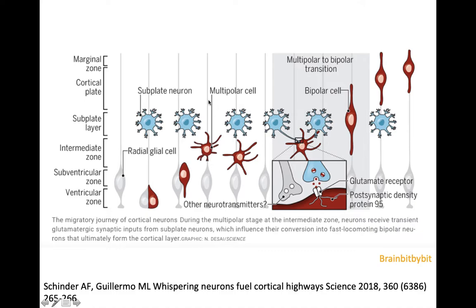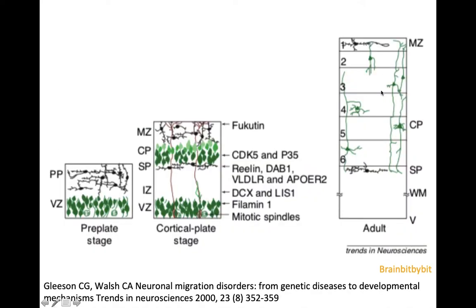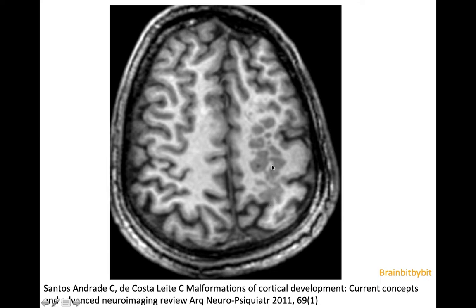First the neurons had this multipolar morphology, and because of this transient contact and glutamate neurotransmission, they changed shape into a bipolar cell mode, which made it easier for them to migrate and move in the cortex. And in each zone — the ventricular zone, the intermediate zone — there is a different environment, and the neurons need different molecules and different genes to migrate to the next region. So in a periventricular heterotopia, there is a different problem than in subcortical heterotopia.